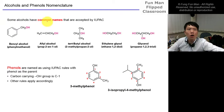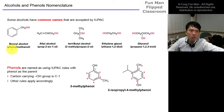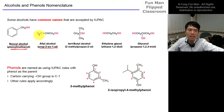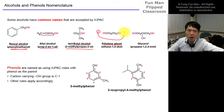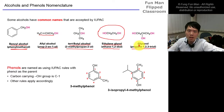Some alcohols have common names also accepted by IUPAC. Benzyl alcohol is called phenylmethanol in IUPAC. Prop-2-en-1-ol is called allylic alcohol. Tert-butyl alcohol is 2-methylpropan-2-ol. Ethylene glycol, used as antifreeze in cars in cold countries like Canada, is ethan-1,2-diol. Propan-1,2,3-ol is found in glycerol, fats, and triglycerides.